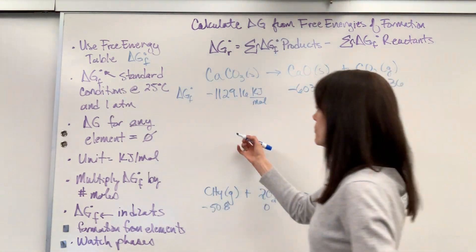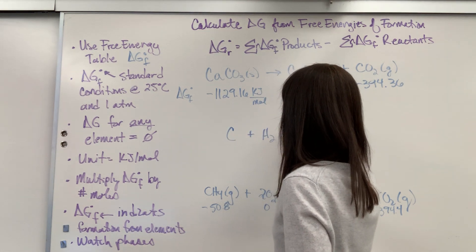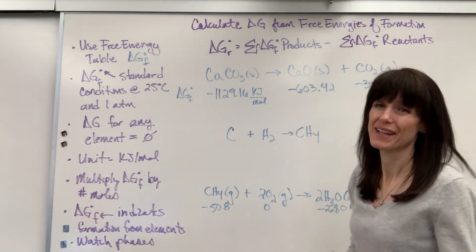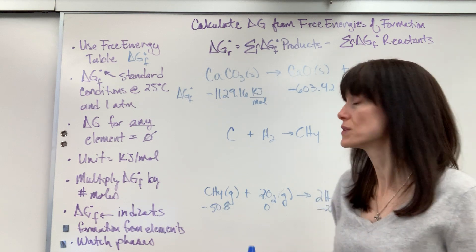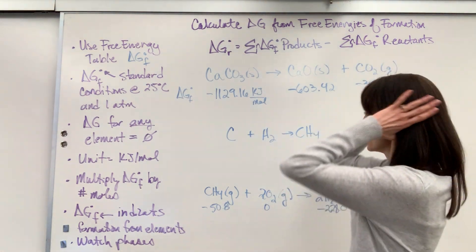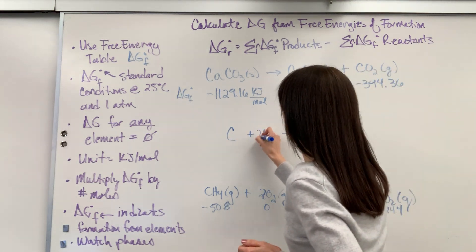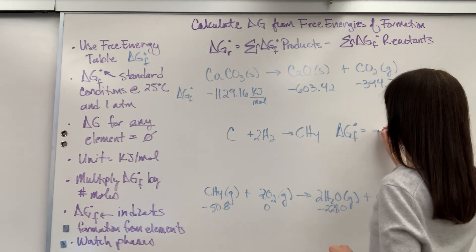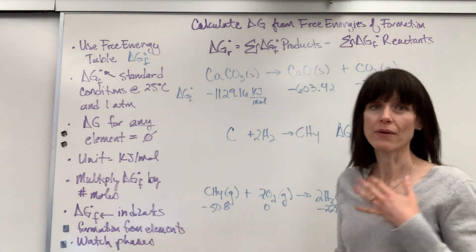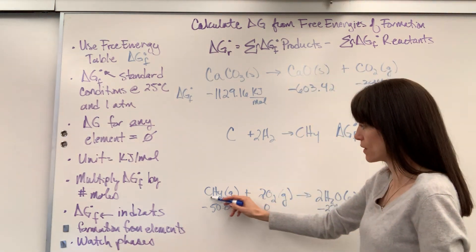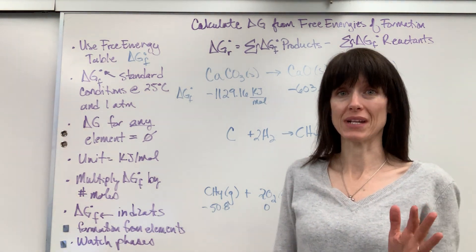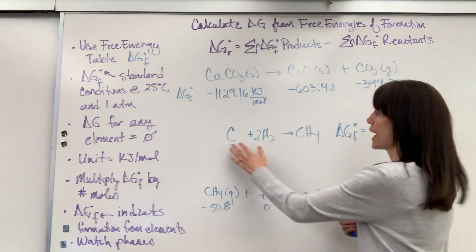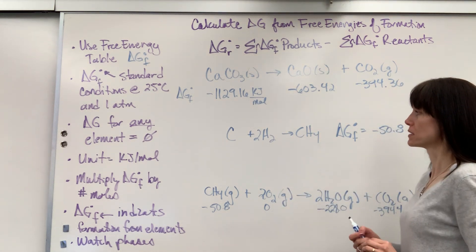I'm going to just take this methane. Methane, we'd have carbon plus hydrogen gas forms methane right here. Now let's go ahead and balance this, and something important on this, you always balance it so that you have one mole of the product. So I'm going to have one carbon, and then I have to have two of the hydrogen gas to form this methane. So the delta G at standard conditions for formation is negative 50.8.